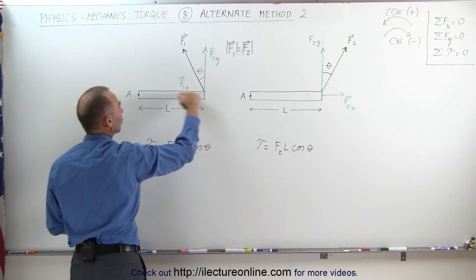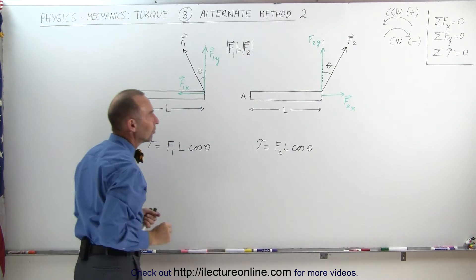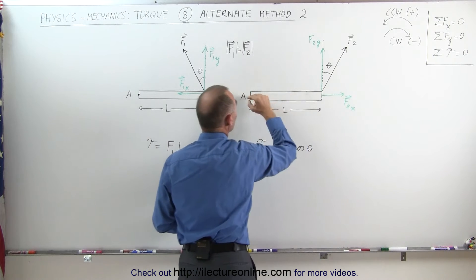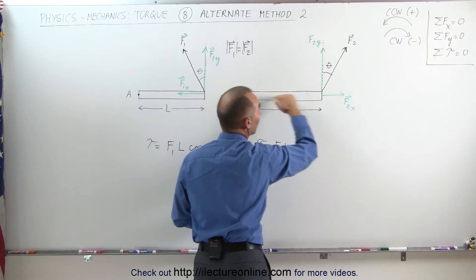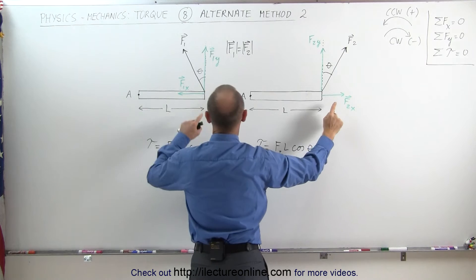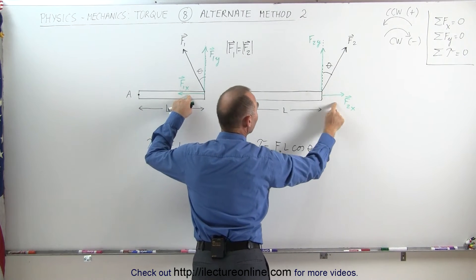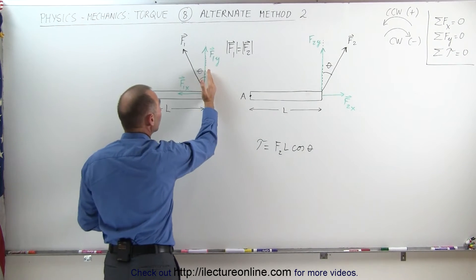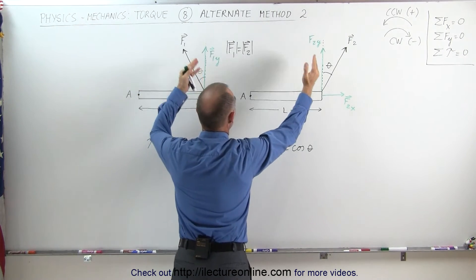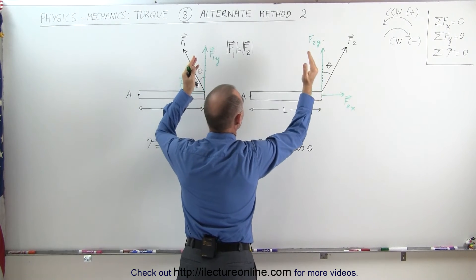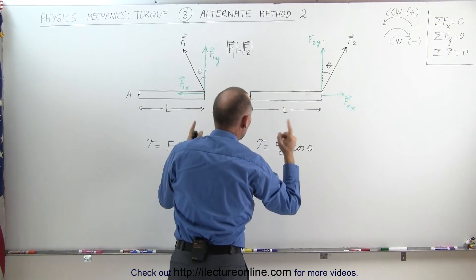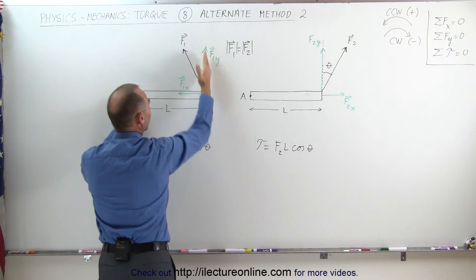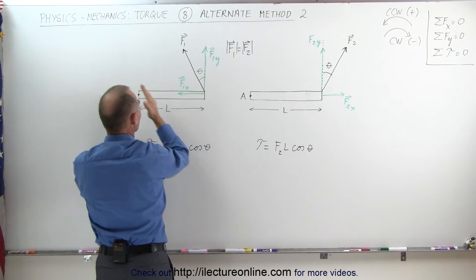The distance between the line of action of the force and the pivot point is equal to zero. On the right side again, you can see that the perpendicular distance from the line of action of the force to the pivot point is also zero. So in both cases F1x and F2x cannot contribute to the torque. The only components that can contribute to the torque are the Y components, and notice that the two Y components are identical — identical in magnitude and identical in direction.